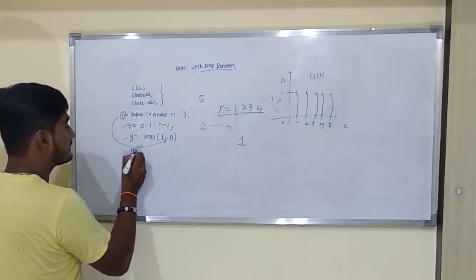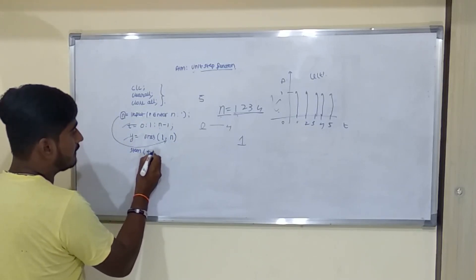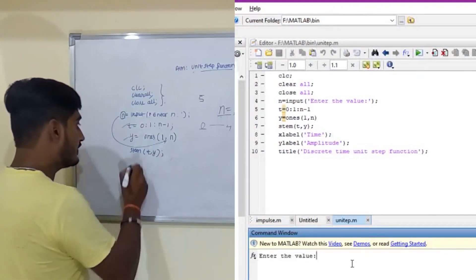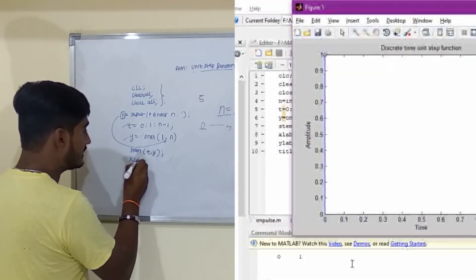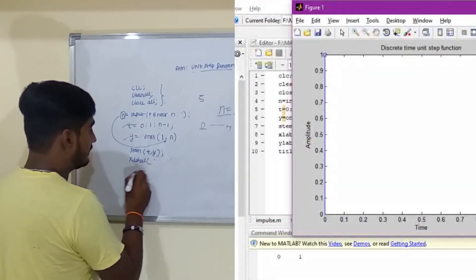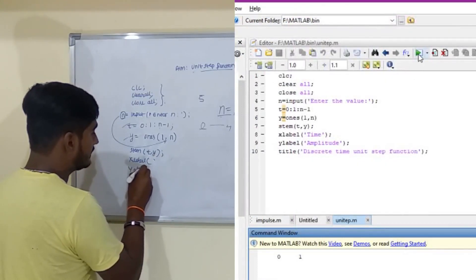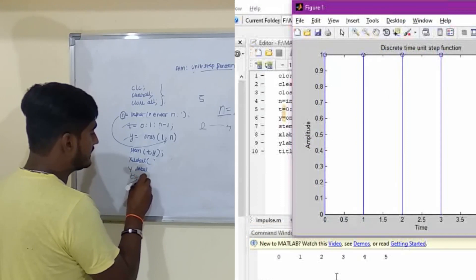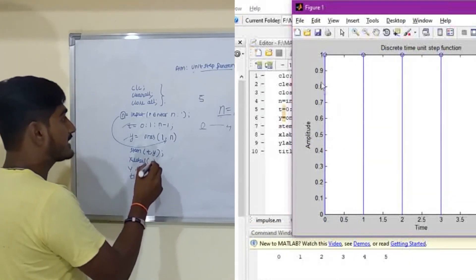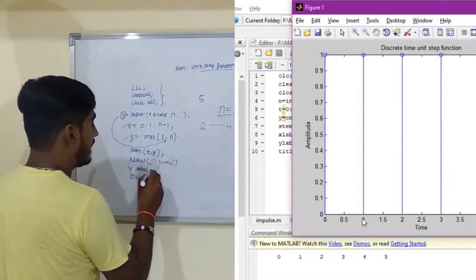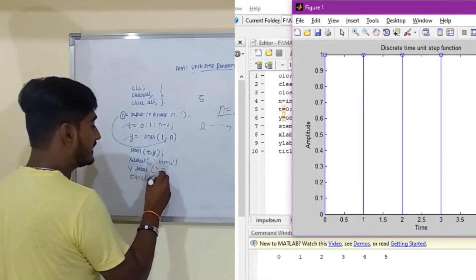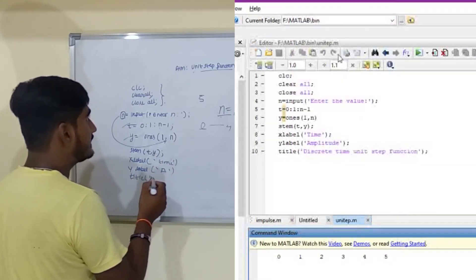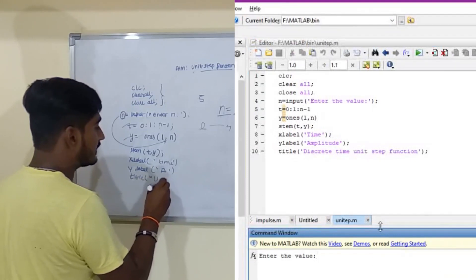We will be plotting this. Stem of t comma y. After plotting this one, we will do x label. So x label will be time, and y label will be amplitude, and the title is unit step function.